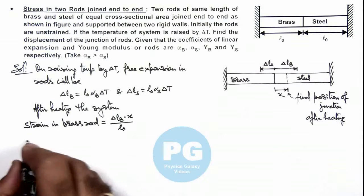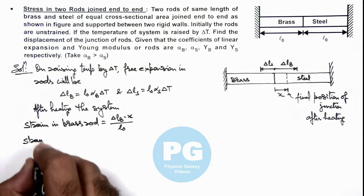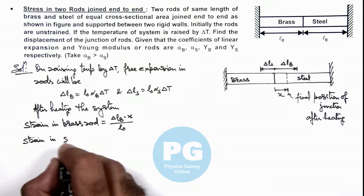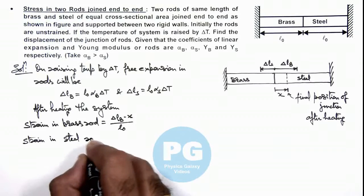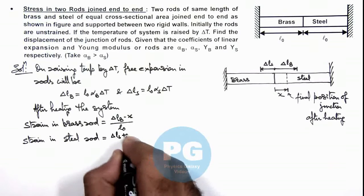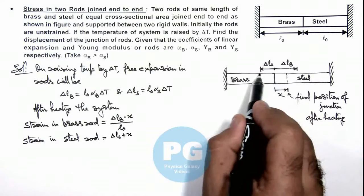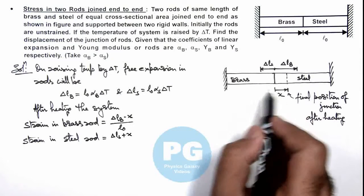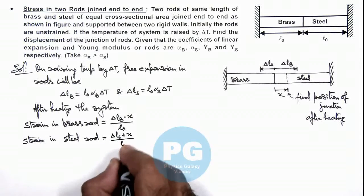And similarly we can calculate the strain in steel rod as (ΔLS + x), as the steel rod will get compressed by the whole length ΔLS plus x, divided by L₀.